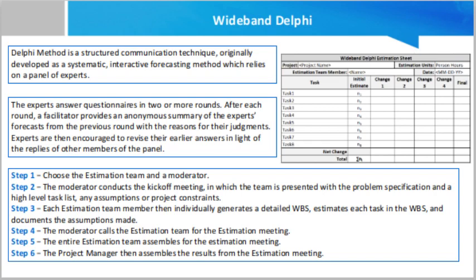The Delphi method is a structured communication technique originally developed as a systematic interactive forecasting method which relies on a panel of experts. The experts answer questions in two or more rounds. After each round, a facilitator provides an anonymous summary of the experts' forecasts from the previous round with the reasons for their judgments. Experts are then encouraged to revise their earlier answers in light of the replies of other members of the panel. It is believed that during this process the range of answers will decrease and the group will converge towards the correct answer. The process is stopped after a predefined stop criterion, such as number of rounds, achievement of consensus, and stability of results.